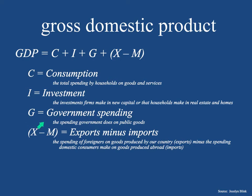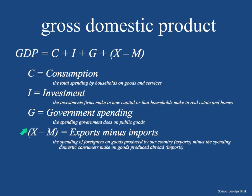G is government spending — the spending government does on public goods. If the government decides to put in a park, they have to pay money to build the park, plant the grass, the trees, pay the engineers, pay the architects, maintain the park. That's government spending, and that means jobs — there's an influx of cash into the economy. The last component of GDP is X minus M, or exports minus imports — the spending of foreigners on goods produced by our country, in my case Chile, minus the spending domestic consumers make on goods produced abroad. These four things — consumption, investment, government spending, and exports minus imports — equal the gross domestic product, which will also equal the aggregate demand in an economy.